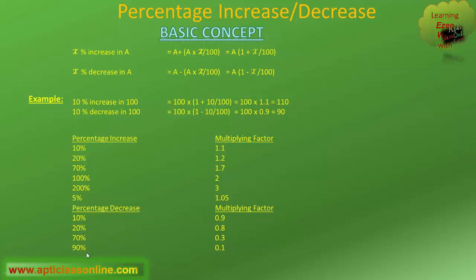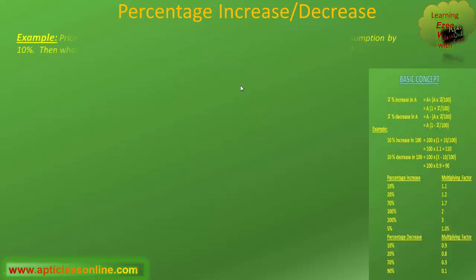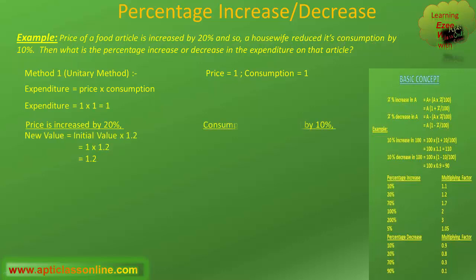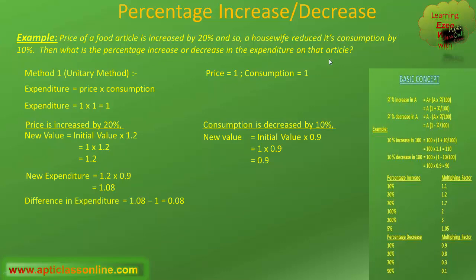Similarly, for other percentage decreases we multiply the initial value with its corresponding multiplying factor. Now let us solve this example. The question reads: the price of a food article is increased by 20 percent, and so a housewife reduced its consumption by 10 percent. What is the percentage increase or decrease in the expenditure on that article? We know the basic relation: expenditure equals price multiplied by consumption. We will use the same methods as in our previous class, applicable in all cases where values on the right-hand side are multiplied to get the value on the left-hand side.